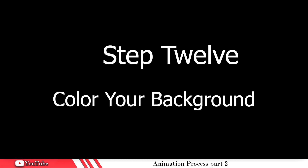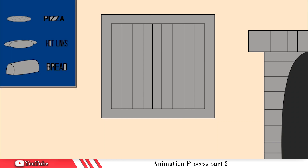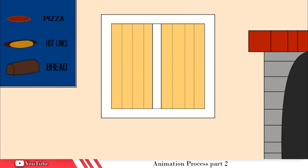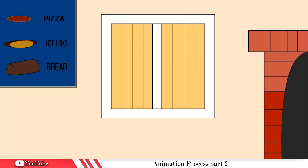Step twelve: color your background. Take care of those basic colors right now. We want to do just the flats — we're not trying to render it out, we're going to save that for a little bit later. Go ahead and color your background. Make sure you get all of the flat colors that you want your background elements to have.